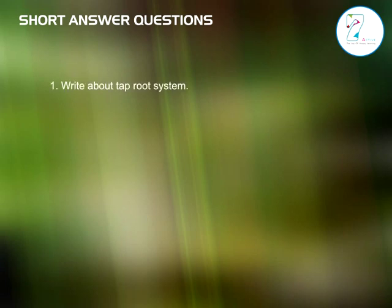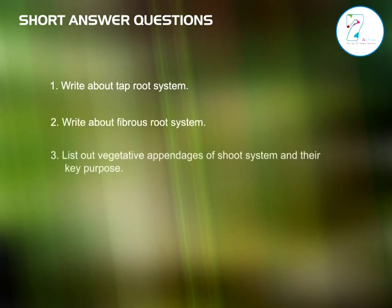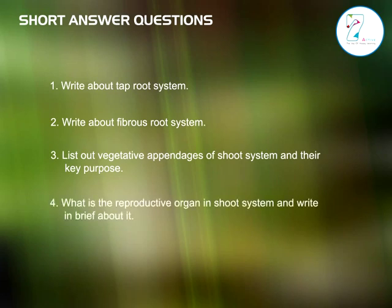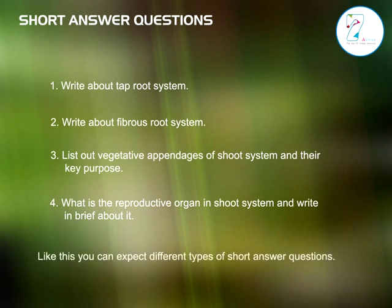Short answer questions: one, write about tap root system. Two, write about fibrous root system. Three, list out vegetative appendages of the shoot system and their key purpose. Four, what is a reproductive organ in the shoot system and write in brief about it. You can expect different types of short answer questions like these.